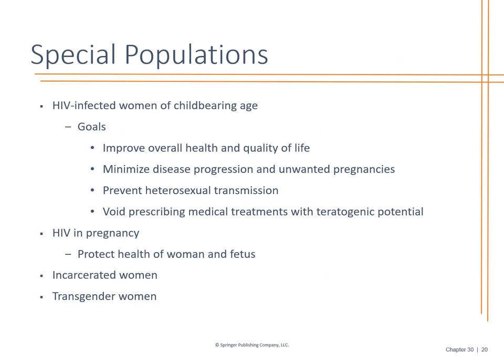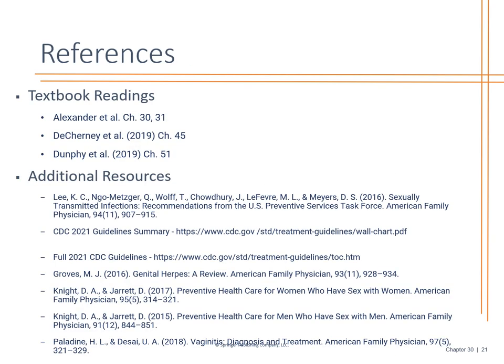The goals are health and quality of life — we want them to have a good quality of life, prevent transmission, decrease unwanted pregnancies and teratogenic effects, and protect both the woman and the fetus if they are pregnant. Special populations including incarcerated women and transgender women warrant further investigation and discussion. Review your textbook readings and additional resources. Thank you.